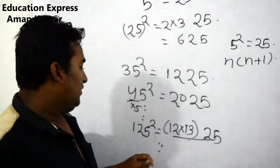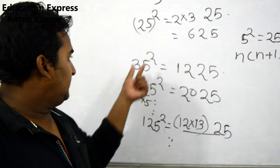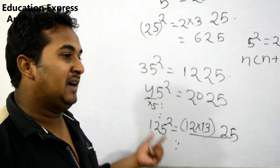In this way, we can evaluate the value of 5 squared, 35 squared, 45 squared, up to 125 squared.